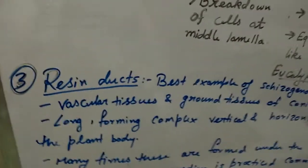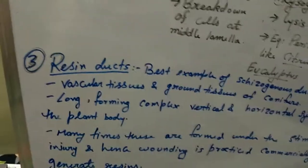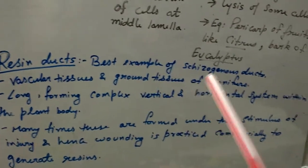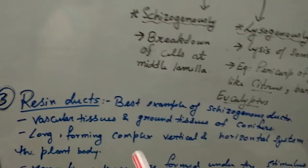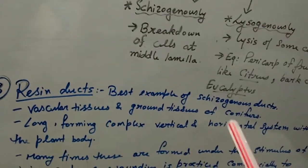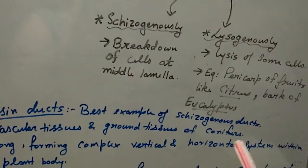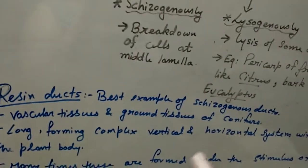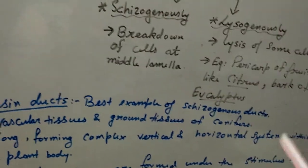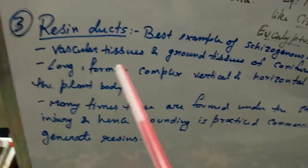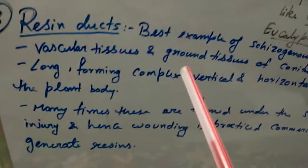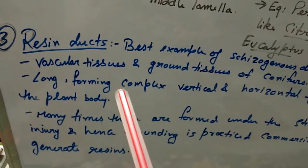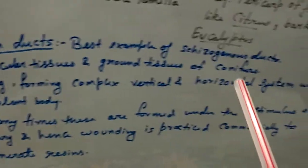The third type of internal secretory structure is resin ducts, which are the best example of schizogenous ducts. Resin ducts are very commonly obtained schizogenously and are found in the vascular tissues and ground tissues of conifers.